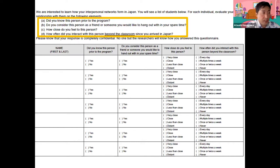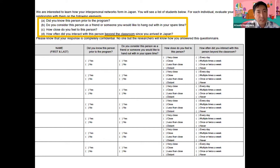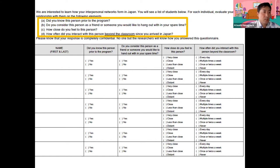Third, how close do you feel to this person? This is the closeness index. Fourth, how often did you interact with this person beyond the classroom since you arrived in Japan? This is the interaction index. Each index points to different aspects of socialization. Each program participant was asked to rate their relationships with each of the other participants, and they were also asked to add more names if they met someone beyond the program in Japan and to rate their relationship with them similarly.